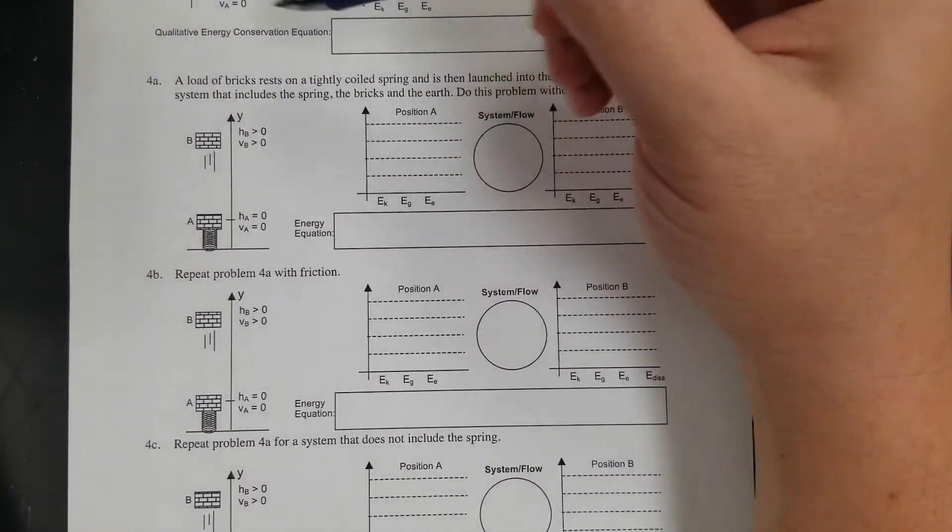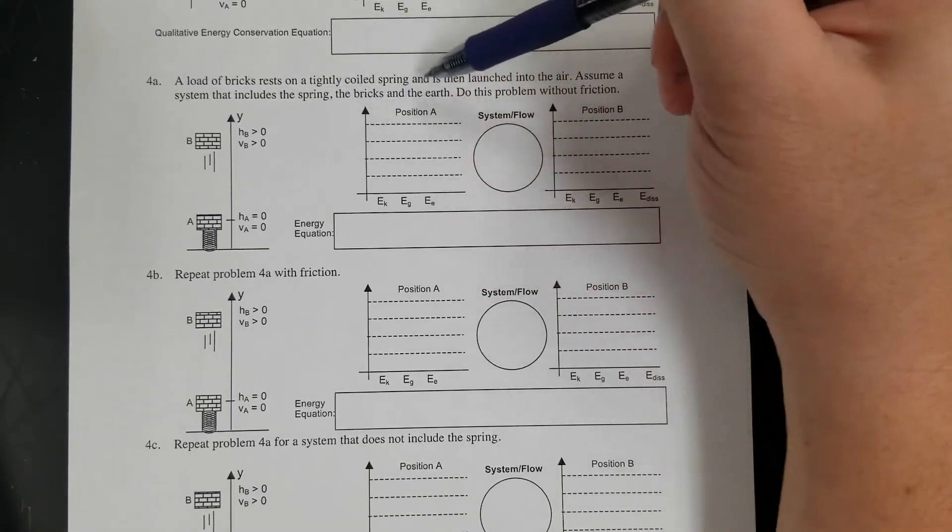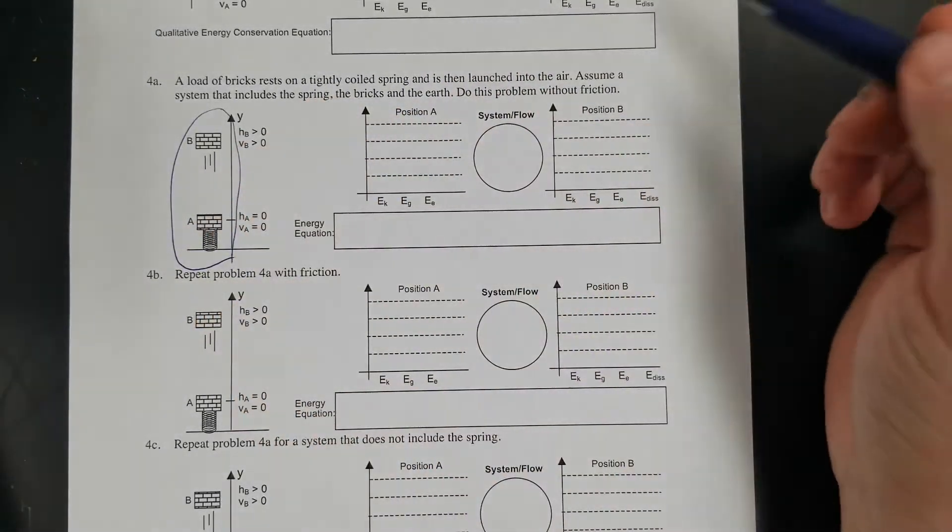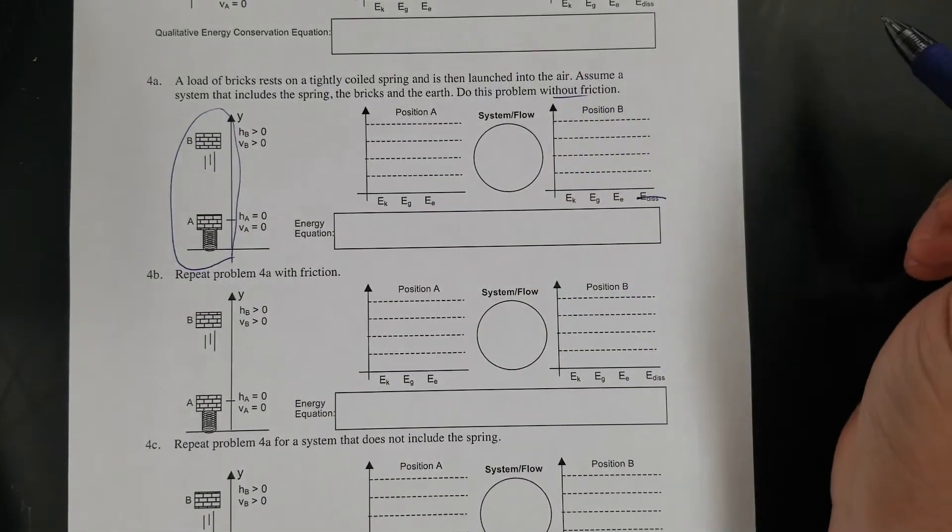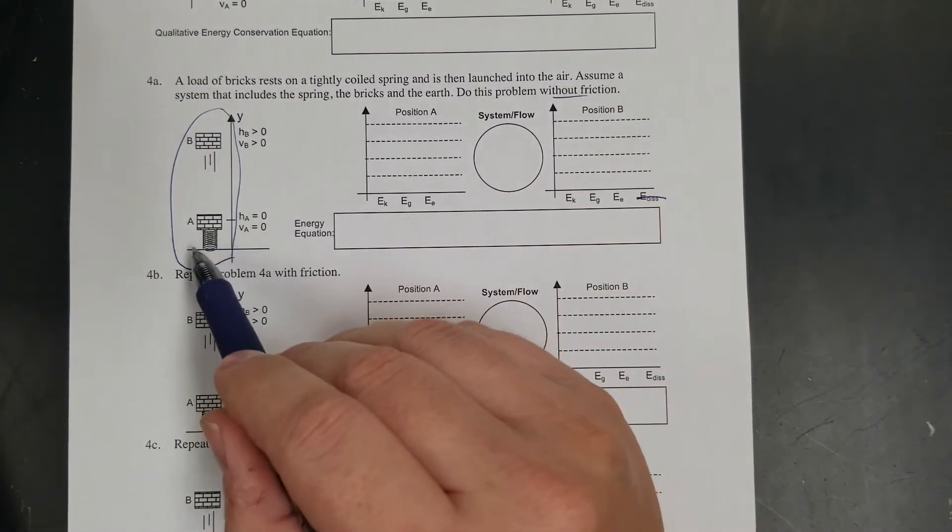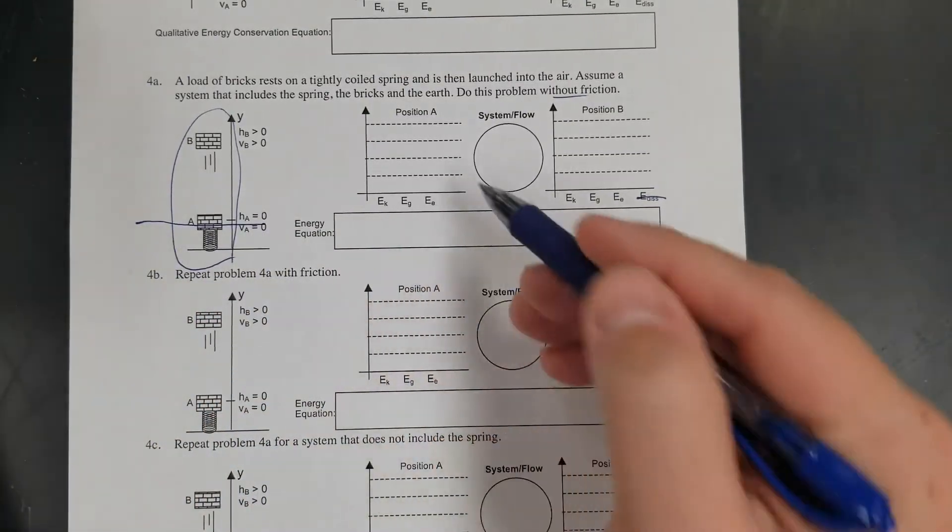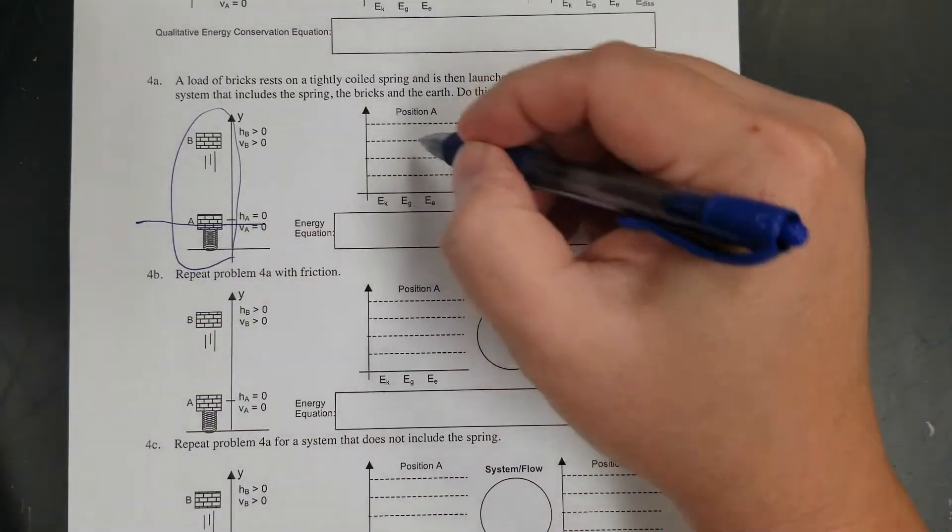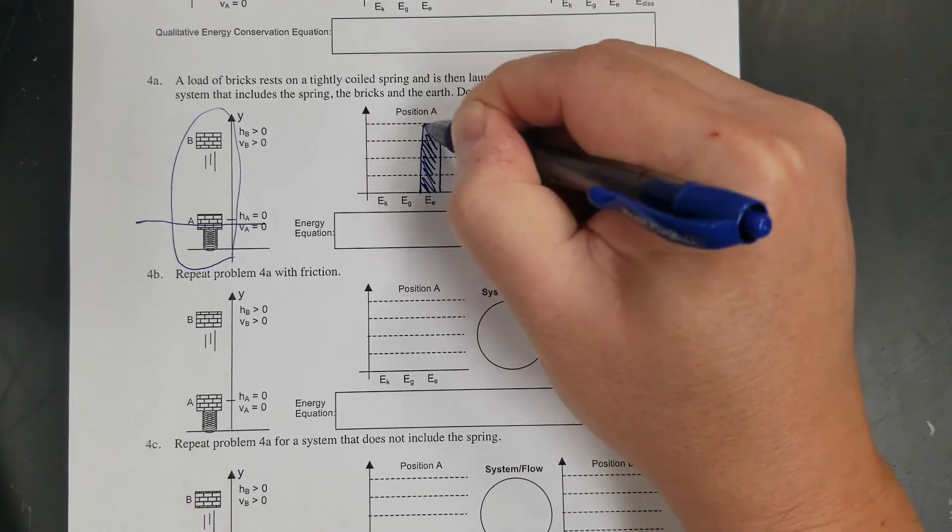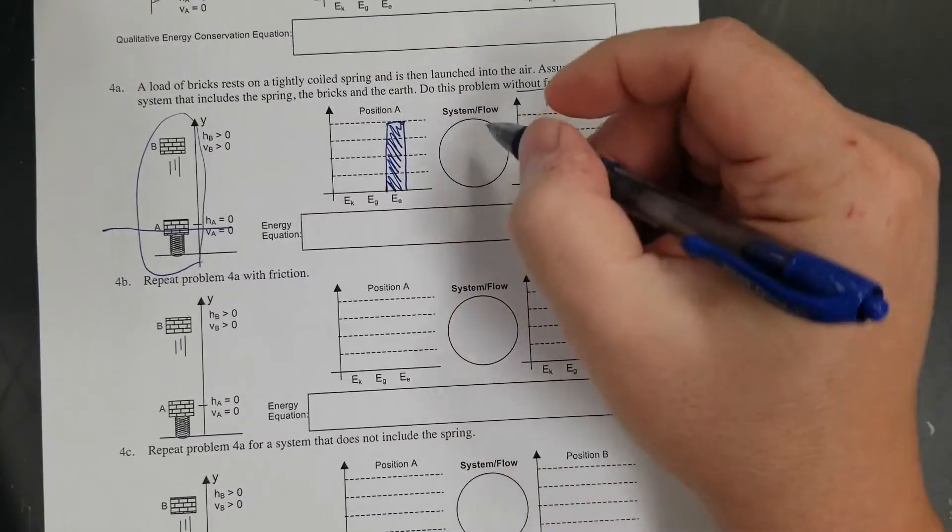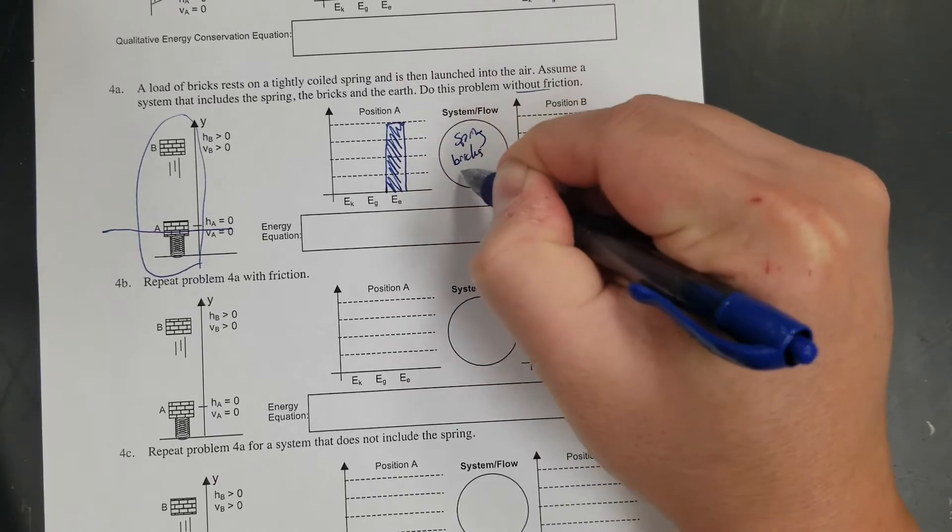Let's try another one. A load of bricks rested on a tightly coiled spring is launched in the air. The system includes the spring, the bricks, and the earth. Do the problem without friction, so there's no heat. If it starts coiled up and the height is zero, there's no gravitational because it's calling this zero. It's all elastic stored in the spring. I'll start with four. Spring, bricks, earth.